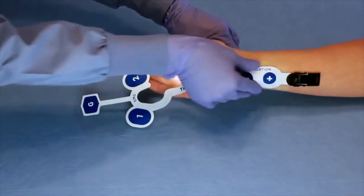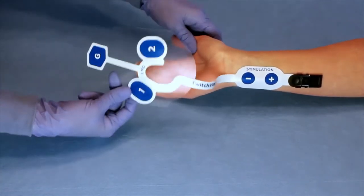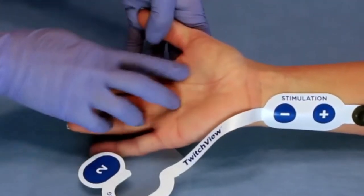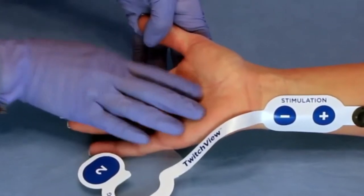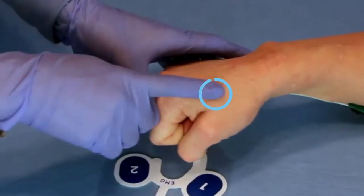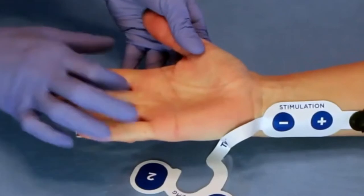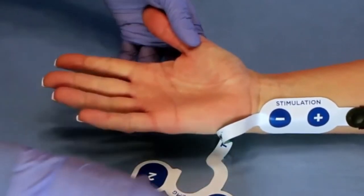Press down firmly to ensure adhesion. The EMG or electromyography recording electrodes are placed over the adductor pollicis just distal to the thenar eminence and on the first dorsal interosseous muscle on the back of the hand. The ground electrode is placed on the index finger.